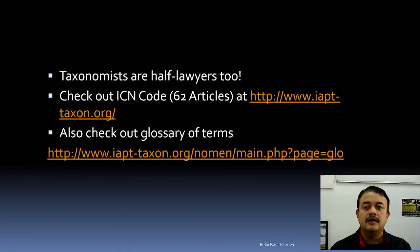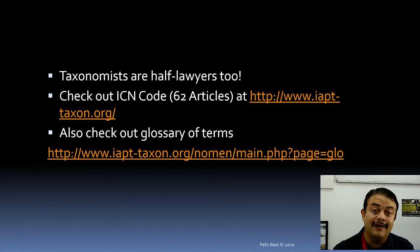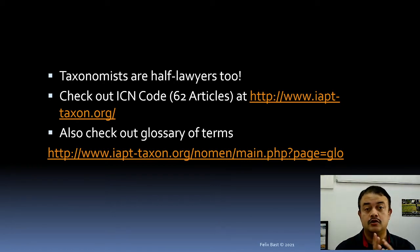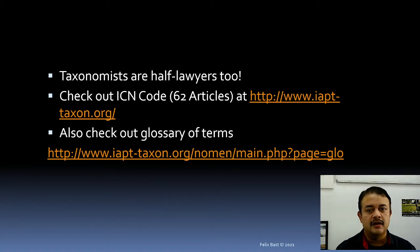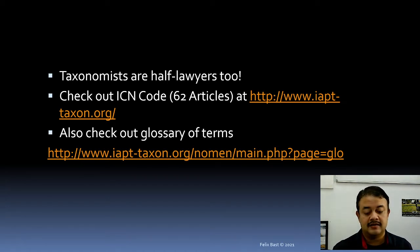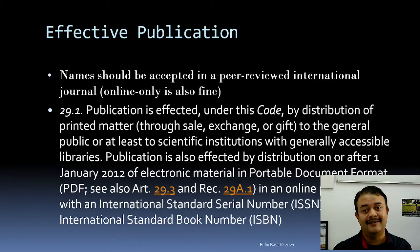Taxonomists are halfway lawyers too — it is a law. We have to decide which name has priority, whether a reclassification or merger of two species into one is formal or invalid. Do check out the ICN, which has 62 articles at the IAPT website, and also the glossary of terms used in plant systematics and taxonomy — a very good resource for plant taxonomy as a discipline.